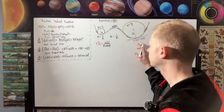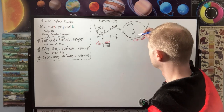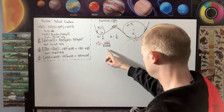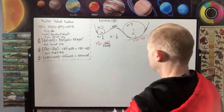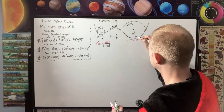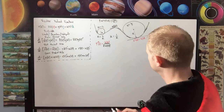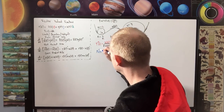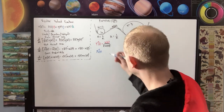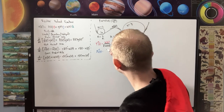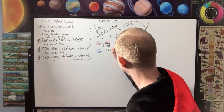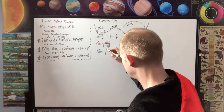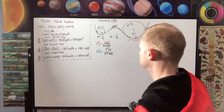Now let's say we wanted to find a vector that was normal to the tangent vector. In order to do that, we take the derivative of the tangent unit vector, which gives us the perpendicular component. So the normal unit vector N̂ equals the derivative of the tangent unit vector T̂' divided by its magnitude |T̂'|.